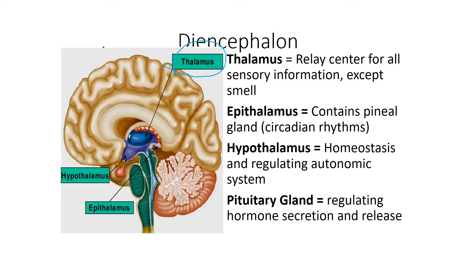Next we have the epithalamus, which we find on the backside and which is attached to the pineal gland. This contains the choroid plexus over the third ventricle, where cerebrospinal fluid is produced. We have about 20,000 clock cells with activity that oscillate every 24 hours, and that's what gives rise to our circadian rhythm.